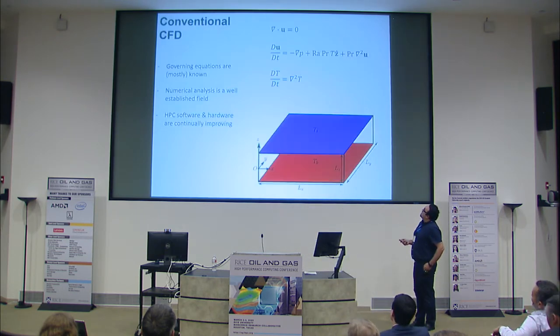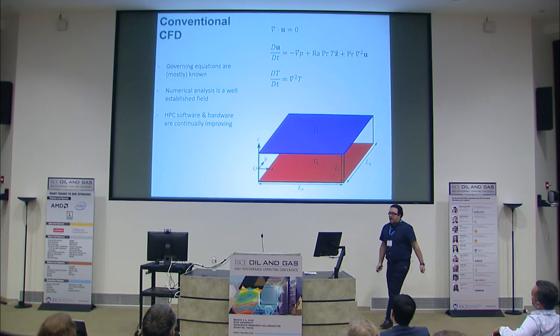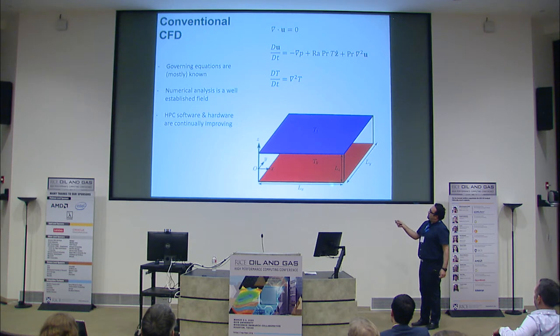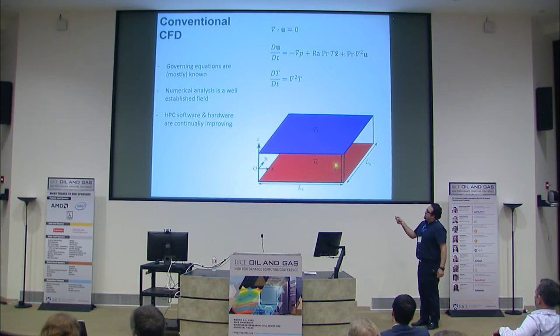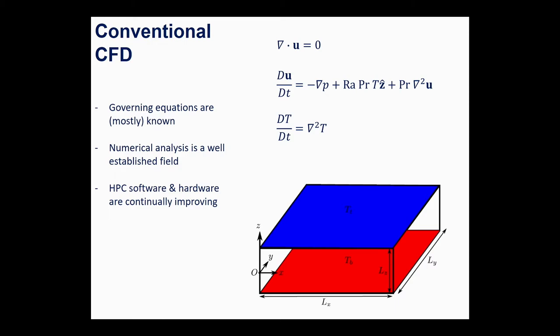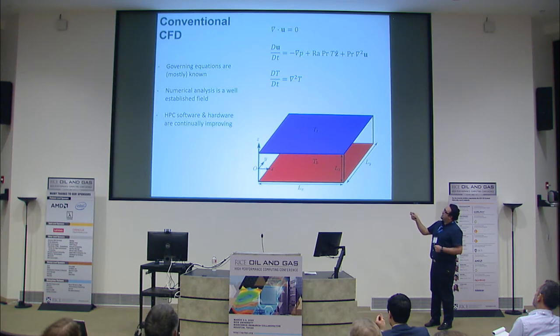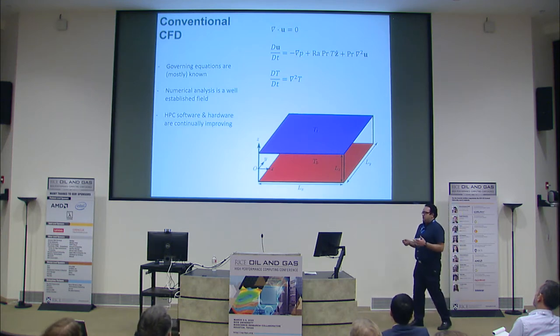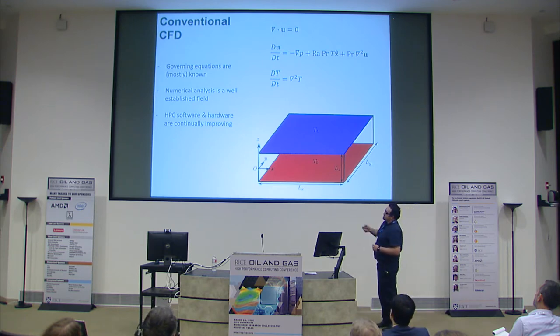There have also been a lot of advances in software and hardware in high-performance computing, allowing us to solve these equations on massively parallel systems. For example, if I want to do a simulation of natural convection — simulating fluid between two walls where the bottom wall is at higher temperature — at some point the system becomes very turbulent. This is a prototype for buoyancy-driven flows in oil and gas, HVAC problems, ocean, and atmosphere. We know the Navier-Stokes equations, conservation of mass, momentum, and energy, and we have many methods: finite element, finite difference, finite volume, and spectral methods.